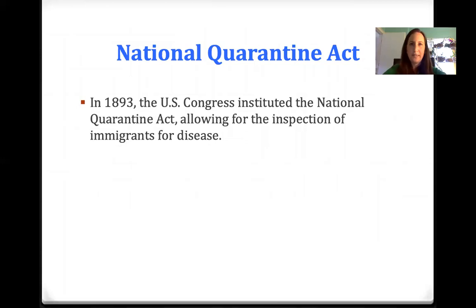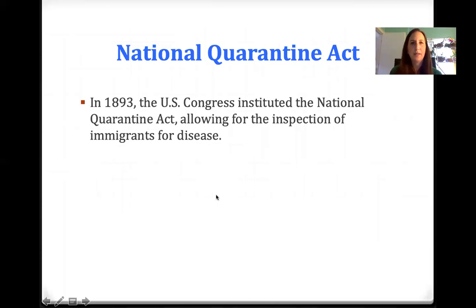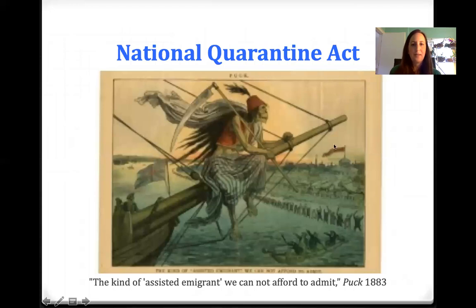This is an interesting ethical conundrum — you don't want someone with a deadly communicable illness to spread it, as we saw with COVID-19. But this also comes with the idea that immigrants are the source of disease, as if real Americans don't spread disease, which is ridiculous. There was a political cartoon in Puck magazine from 1883 called 'The Kind of Assisted Immigrant We Cannot Afford to Admit' — clearly an image of death coming in on a ship of immigrants.